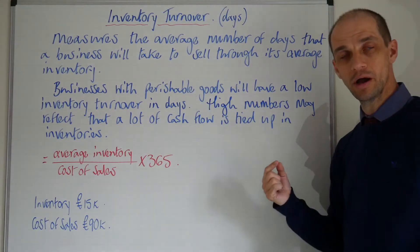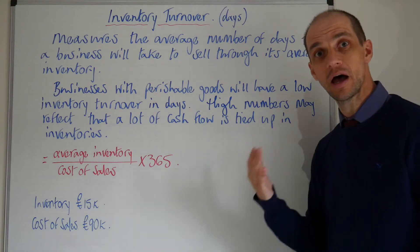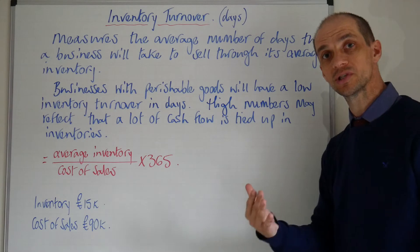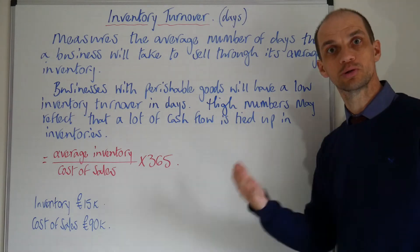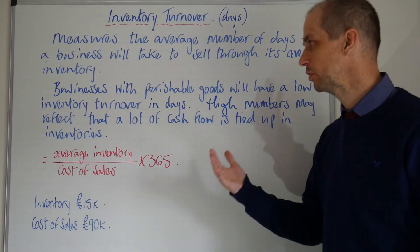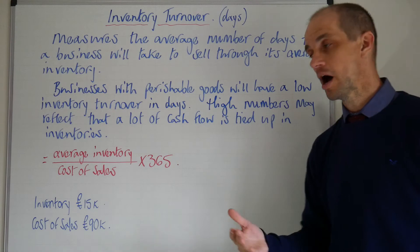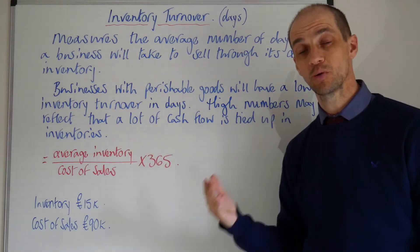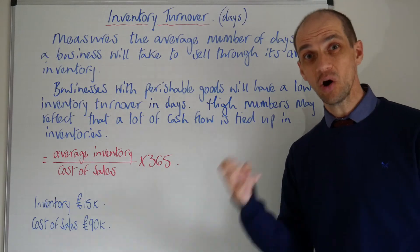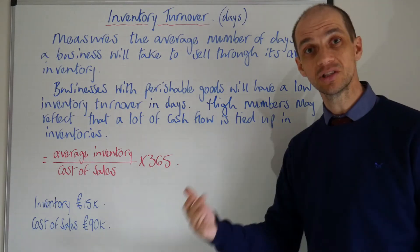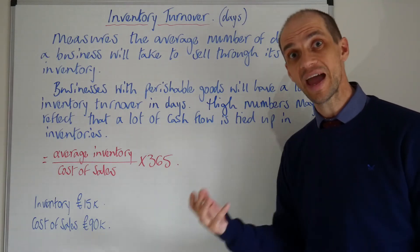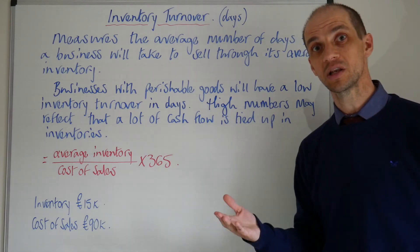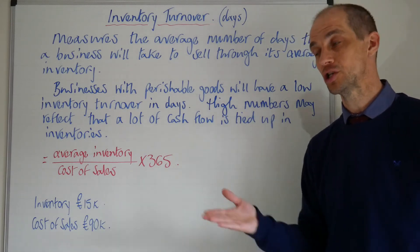A high number may indicate a business which only sells a small number of items across the year — it could be something like a Rolls-Royce showroom. Alternatively, it may reflect that a lot of cash is tied up in the inventories of the business, which can of course cause cash flow problems and affect the liquid capital ratio.